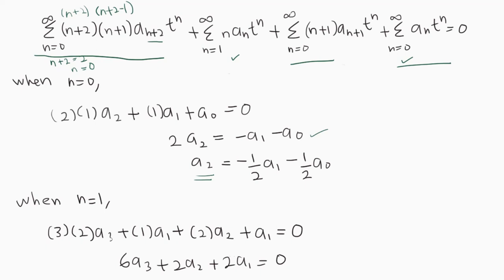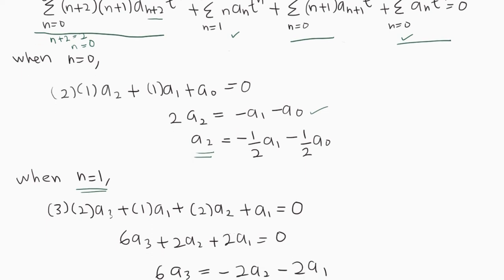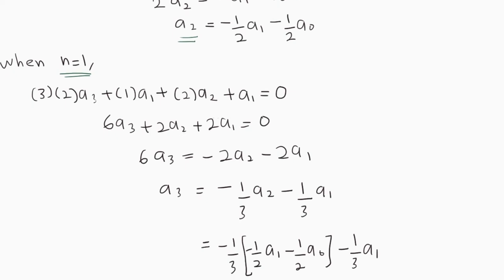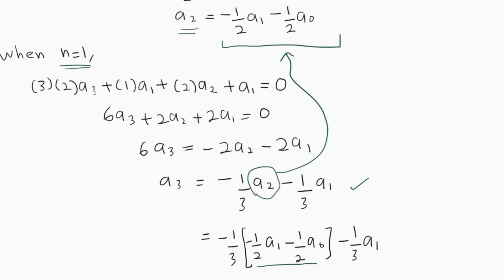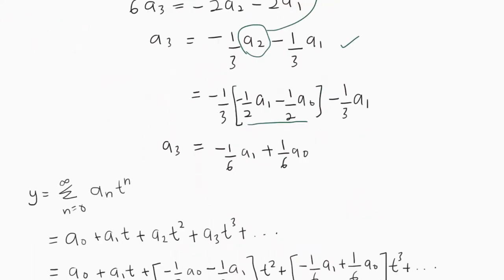We don't need the full recurrence relation since we only need up to (x-2)^3, meaning we just need coefficient a₃. Substituting n = 1 into the summation, we get 3·2·a₃ + 1·a₁ + 2a₂ + a₁ = 0. Simplifying, a₃ = -⅓a₂ - ⅓a₁. Substituting a₂ = -½a₁ - ½a₀ into this expression and simplifying gives a₃ = -⅙a₁ + ⅙a₀.